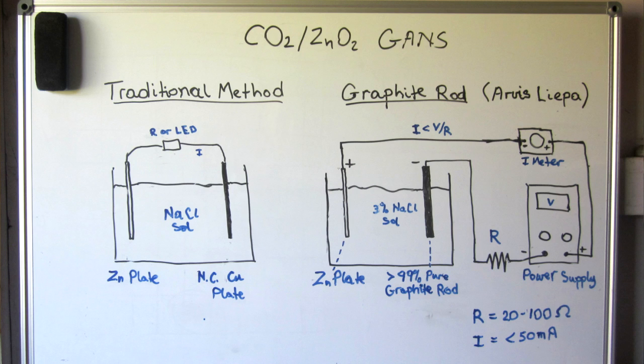There are two basic methods to make CO2 GANS. The traditional method, shown on the left using nano-coated copper plate and the zinc plate in a salt solution. And then there is the graphite rod method which replaces the nano-coated copper with a graphite rod. I actually prefer the graphite rod method because it's faster in producing CO2 and also a lot simpler and less messy to work with, so the information that follows is largely geared to that particular method.